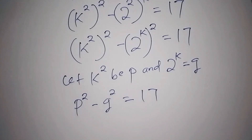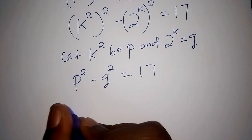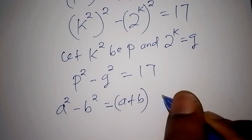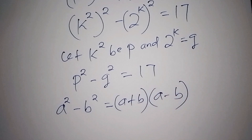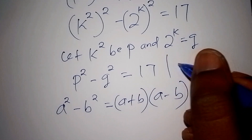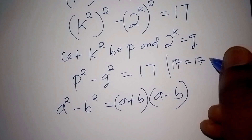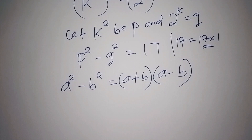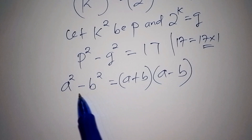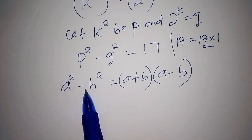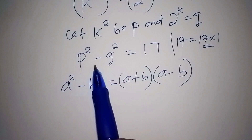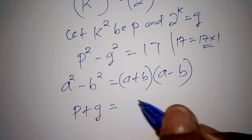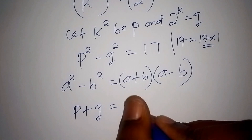We know that a squared minus b squared gives us a plus b, in bracket, times a minus b, in bracket. Now 17 can also be written as 17 multiplied by 1. So p squared minus q squared represents a squared minus b squared, meaning a and b are represented by p and q.